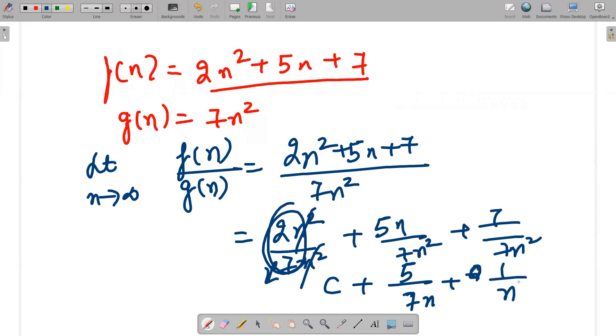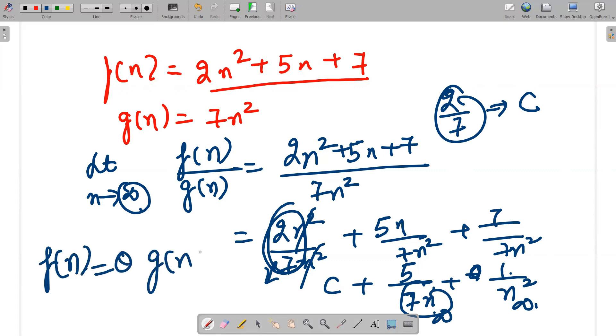n². Now if I put n value as infinite over here, 5 divided by infinity is 0, 1 divided by infinity is 0. So we have the answer of 2 divided by 7, which is a constant value. We can clearly say that if it is a constant value, f(n) is theta of g(n). This is calculated like this.